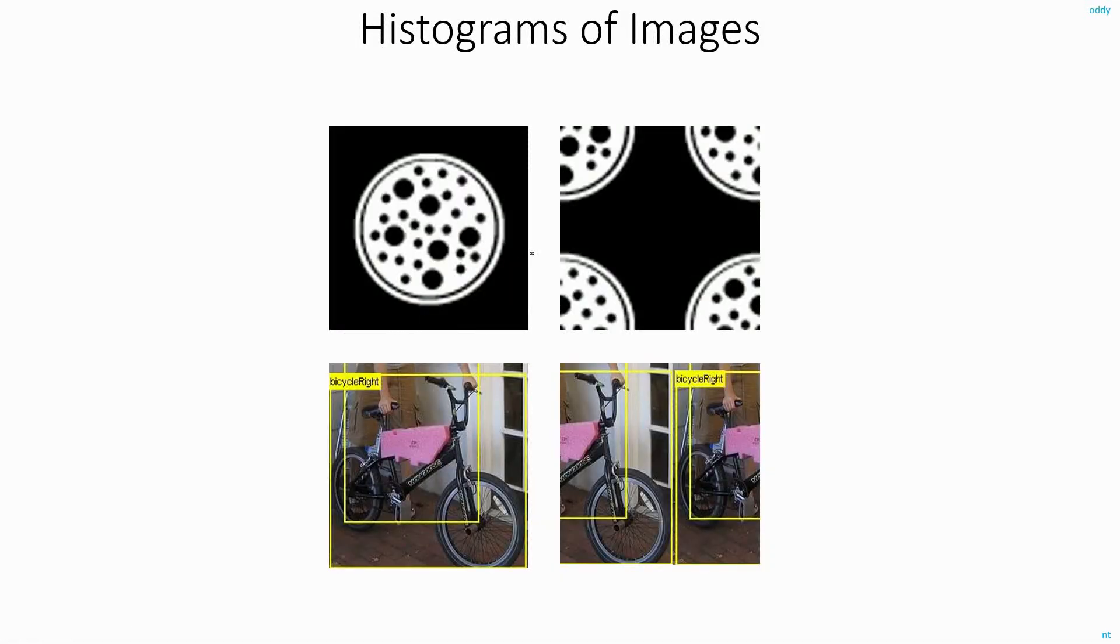So which means for these two images, the histogram will be the same. And similarly for these two images again, it will be the same. The second image here, I got it by splitting this image into two halves and swapping the left and right portion. Because I have merely swapped the two halves, the histogram will be the same.